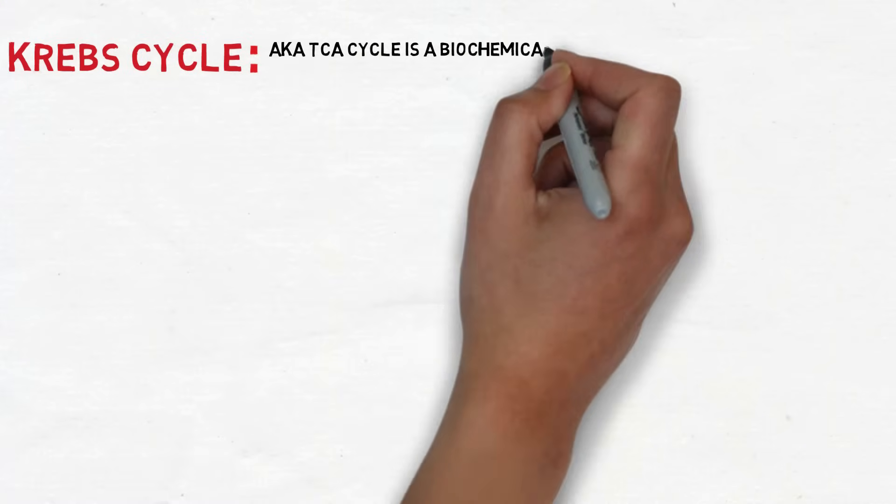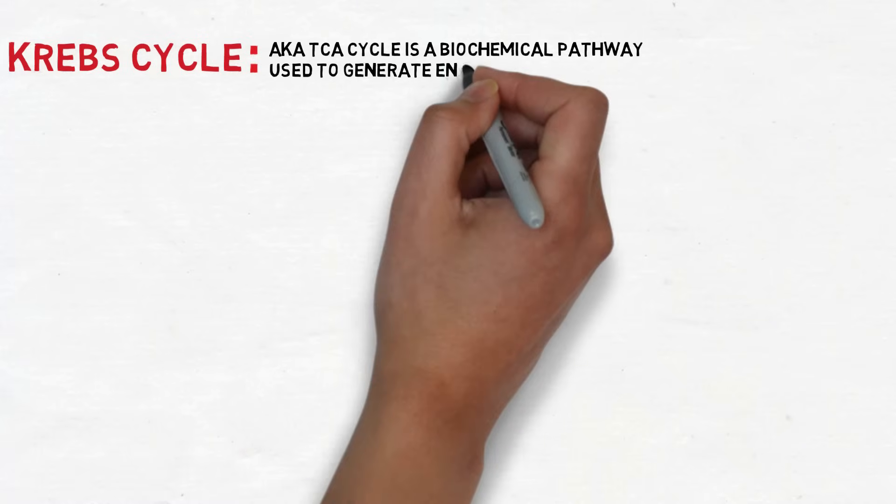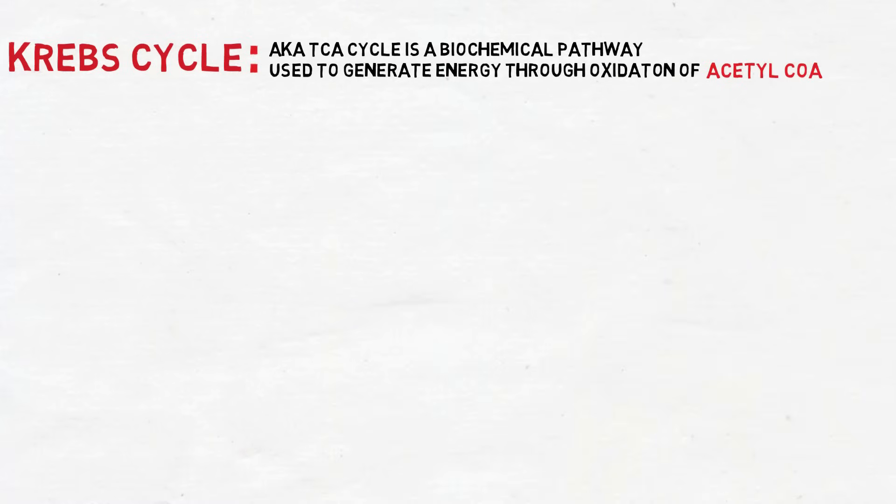Krebs cycle is also known as the tricarboxylic acid cycle and it is a biochemical pathway that is used to generate energy through the oxidation of acetyl-CoA.